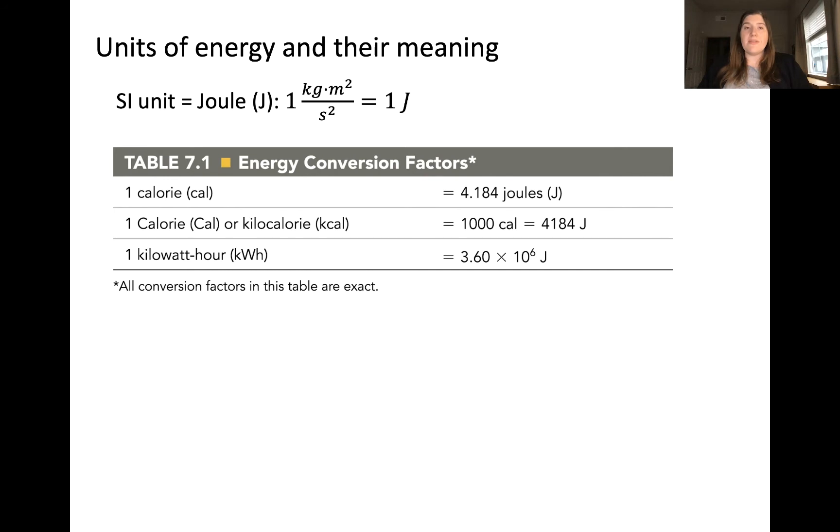There are multiple different units used to report energy, the SI unit being the joule. The joule is a compound unit, which is a kilogram times meters squared per second squared. Other common units include the calorie, the kilocalorie, and the kilowatt hour.